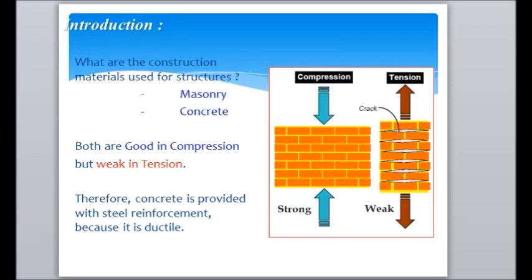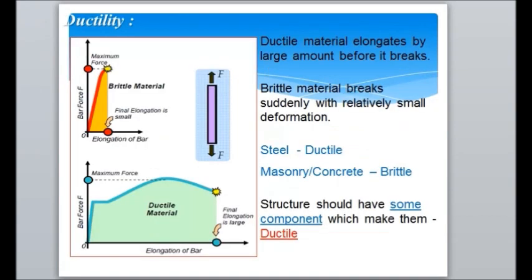We use different types of materials in construction: concrete, masonry, and steel. When we talk about concrete and masonry, both are very good in taking compression, but they are weak in tension. That's why we have to reinforce with steel bars to make it strong. Therefore, concrete provided with steel reinforcement becomes ductile.